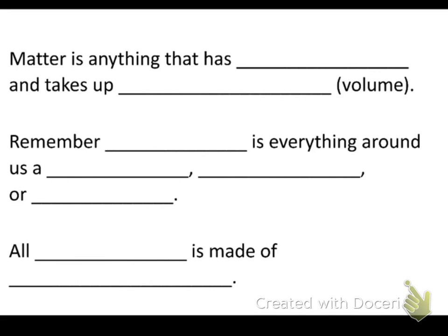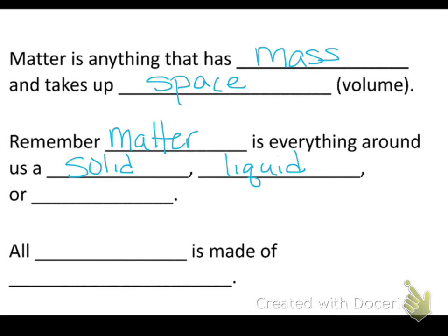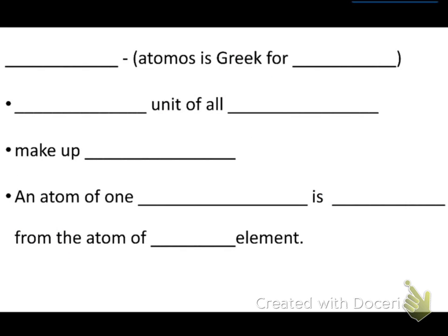So first of all, matter is anything that has mass and takes up space. Remember that matter is everything around us, and there are three states, which are solid, liquid, or gas. And then also remember that all matter is made of atoms. So, that's just a little flashback to our matter stuff. And now we're going to talk about atoms specifically.